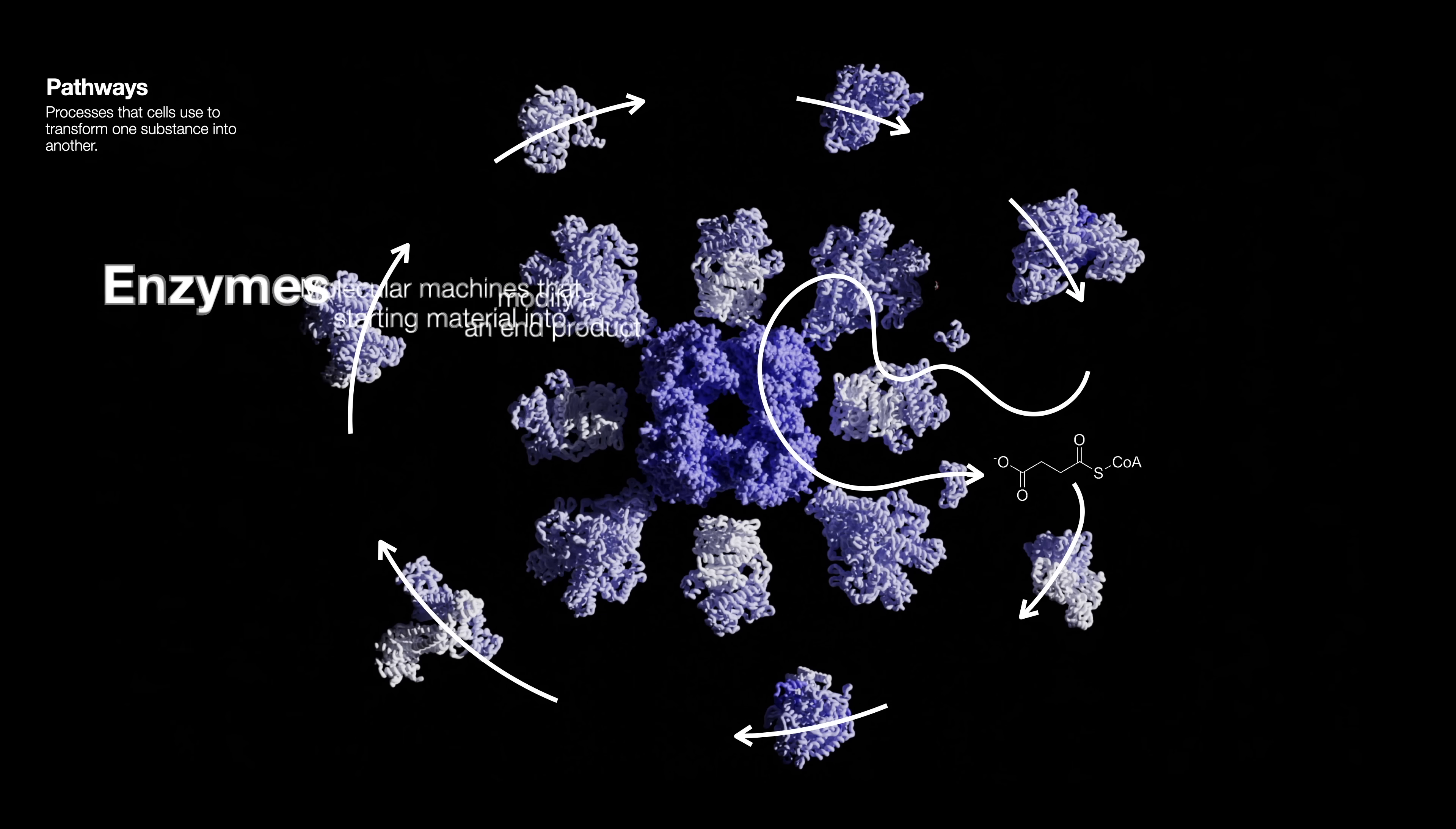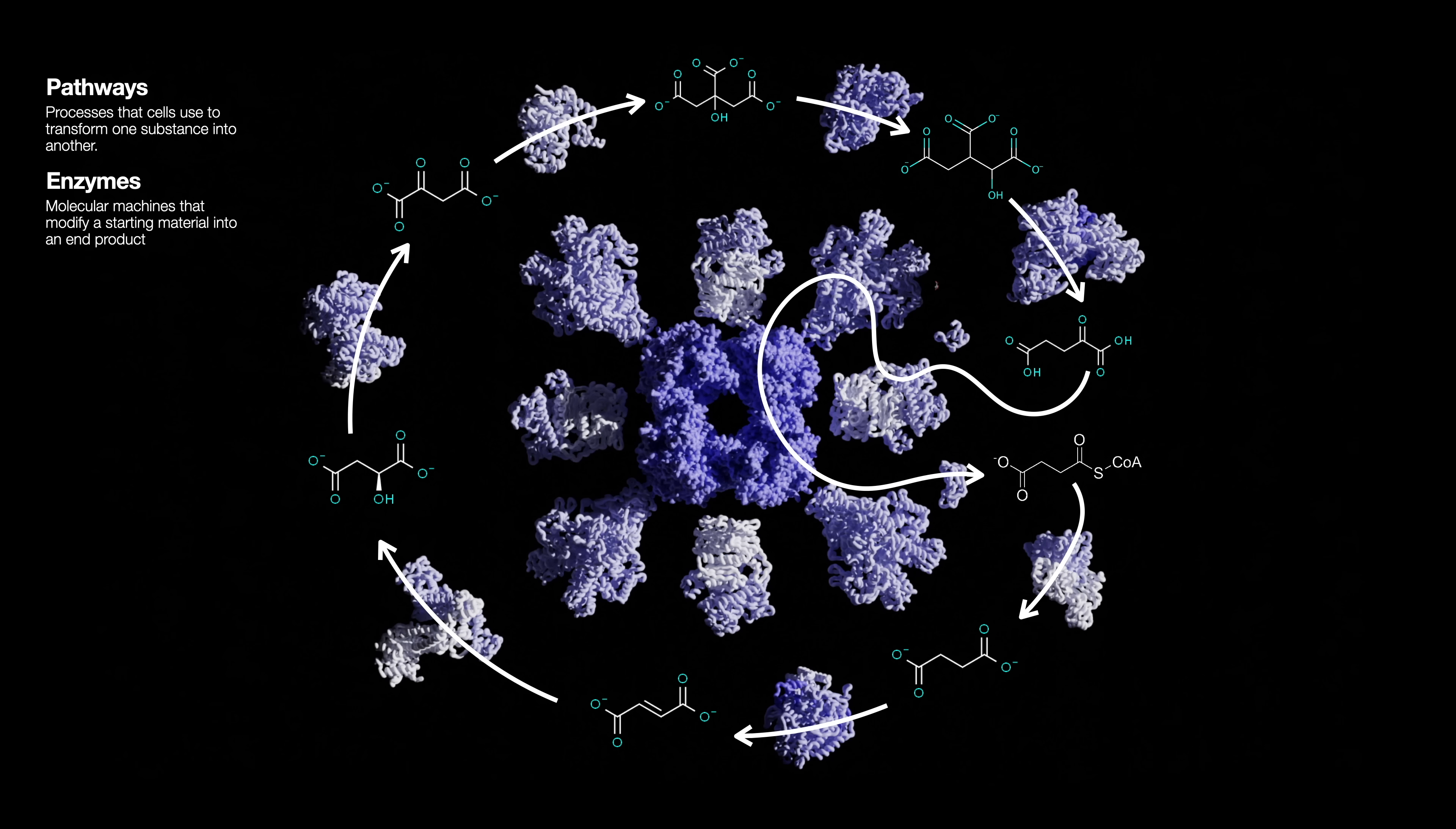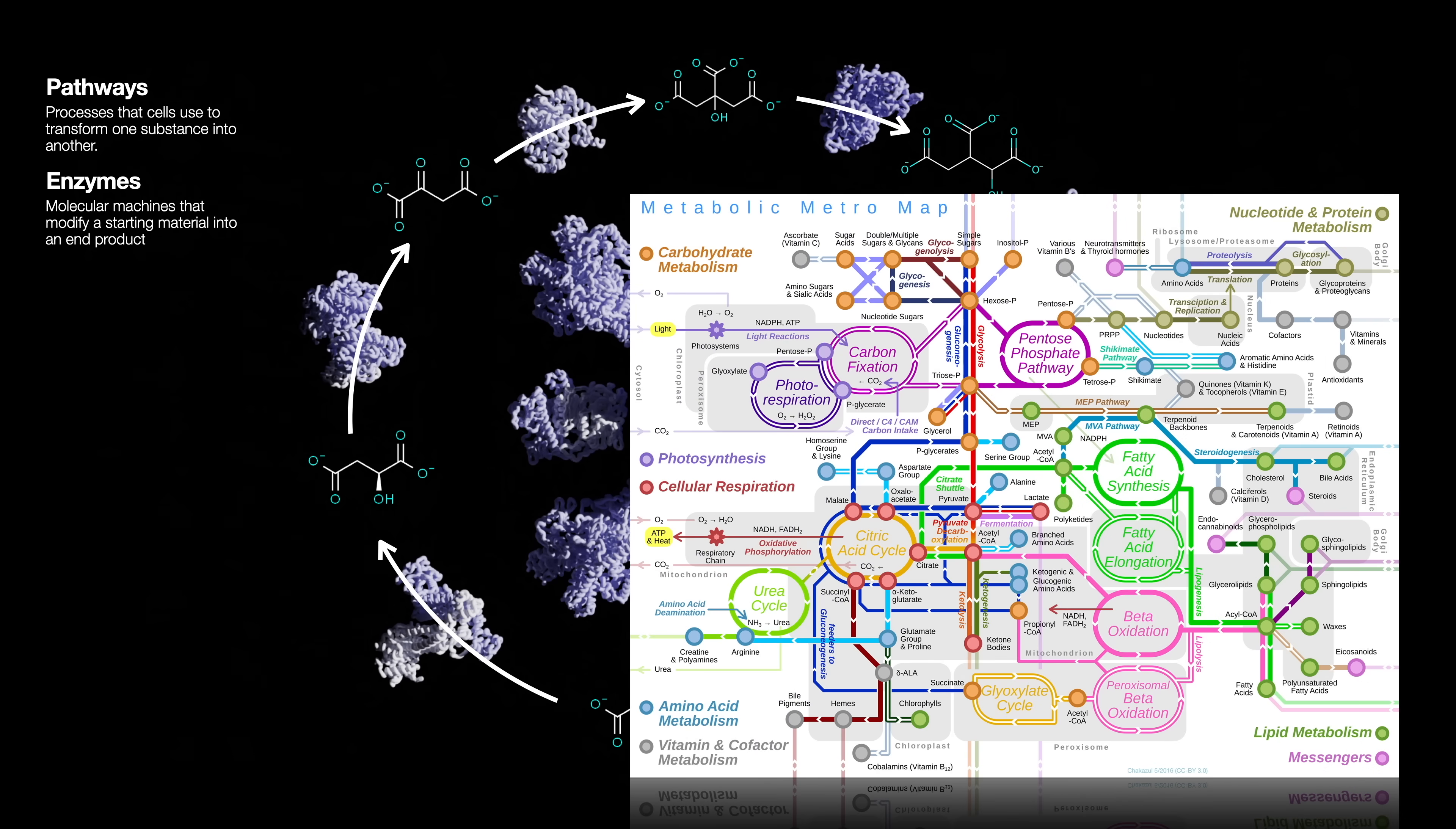These little machines are known as enzymes. So a pathway is essentially a series of chemical reactions that allow cells to transform one substance, also known as metabolites, into another with the aid of enzymes. I trust that those of you in the audience that know even a little bit of biology have a similar intuition. I mean, this map is probably what you have in mind when I say pathways, right?